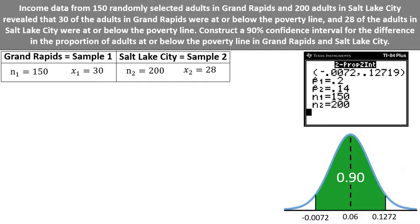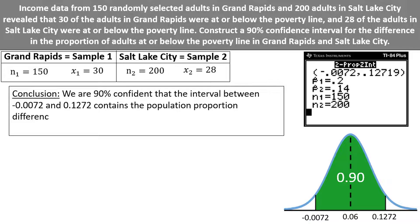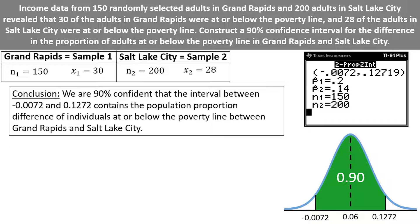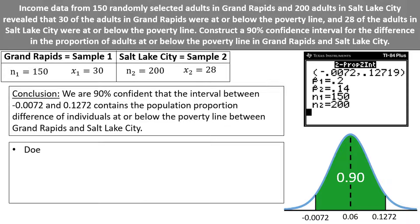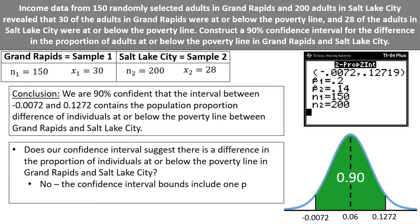Now we are ready to write our official conclusion. We are 90% confident that the interval between negative 0.0072 and 0.1272 contains the population proportion difference of individuals at or below the poverty line between Grand Rapids and Salt Lake City. Does our confidence interval suggest that there is a difference in the proportion of individuals at or below the poverty line? No — the confidence interval bounds contain one positive and one negative value, meaning 0 is contained inside the interval, and 0 represents no difference in the population proportions.